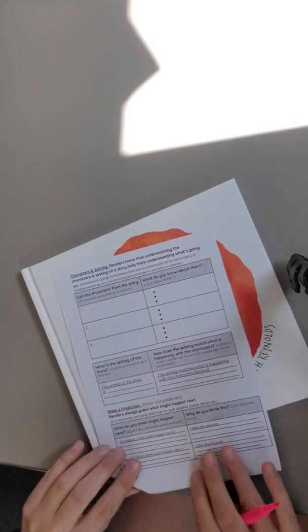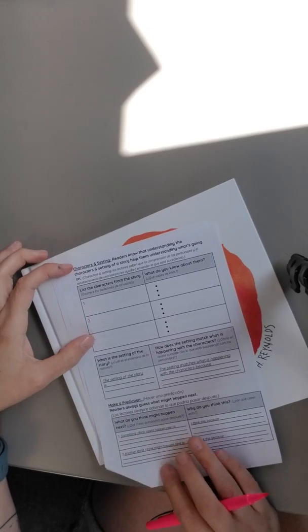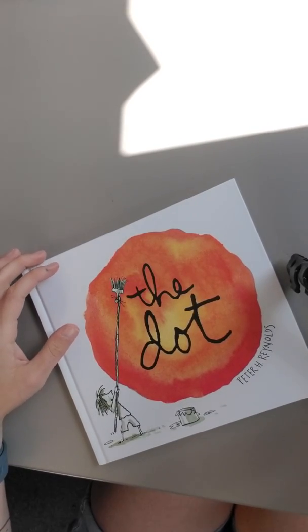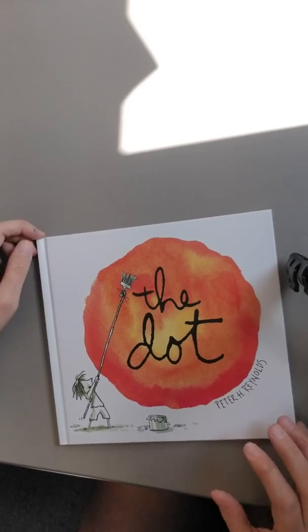Once you finish that, you can turn to the back. We're going to be looking for characters and setting. So let's go ahead and start reading. The Dot by Peter H. Reynolds.